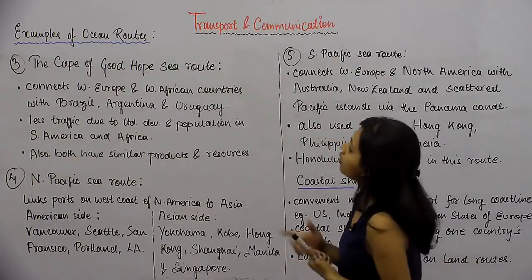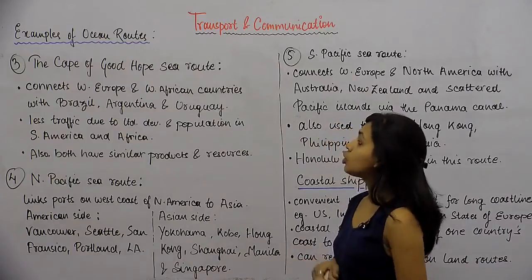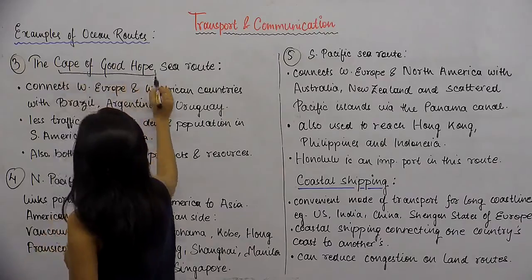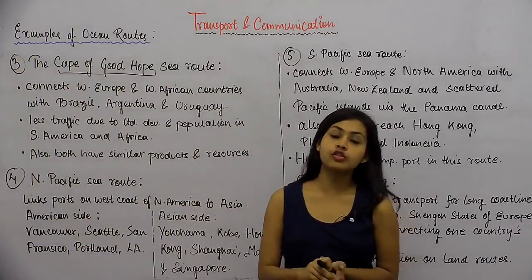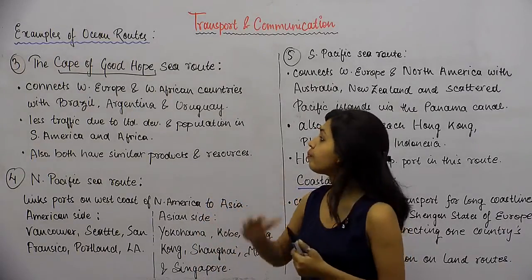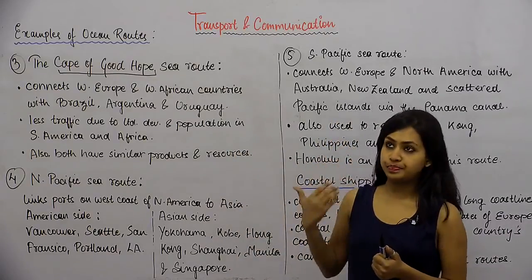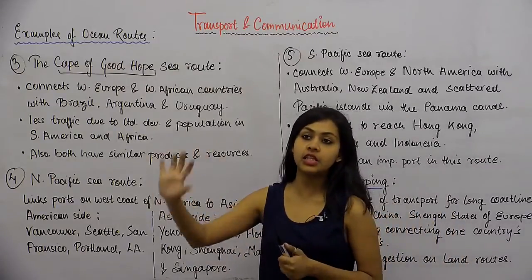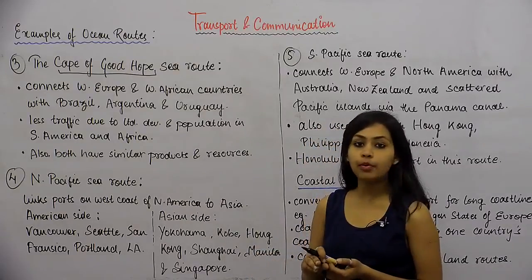Our next example of ocean route is the Cape of Good Hope Sea Route. The Cape of Good Hope is basically a cape that falls on the coastline of Africa along the Atlantic Ocean. It's on the west coast of the African continent, facing the Atlantic Ocean. That's where the Cape of Good Hope is.